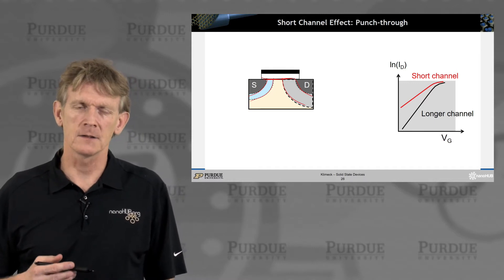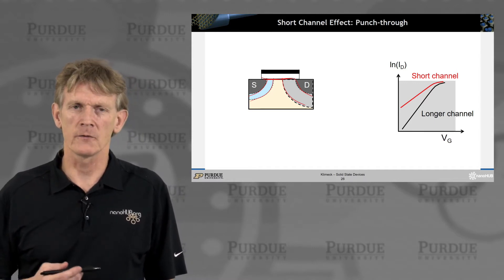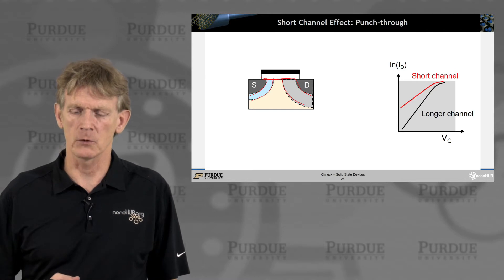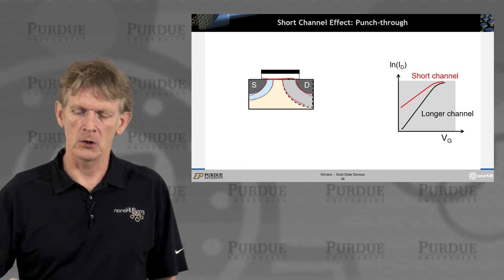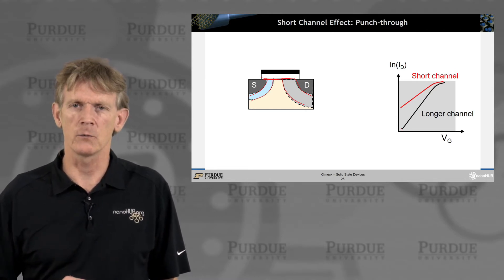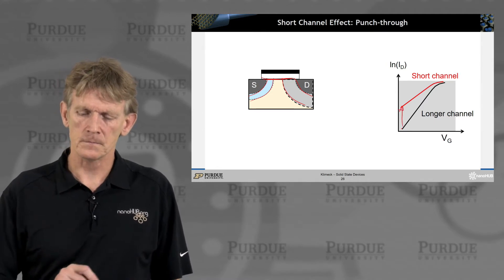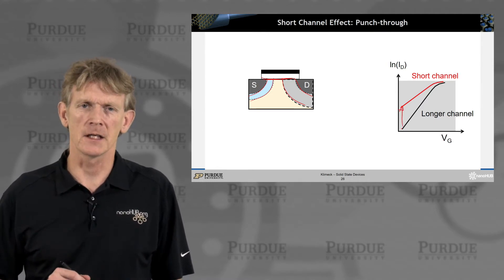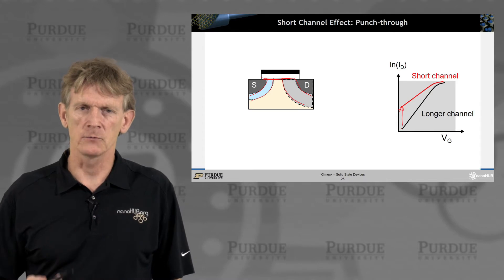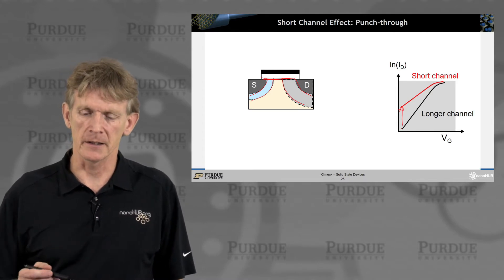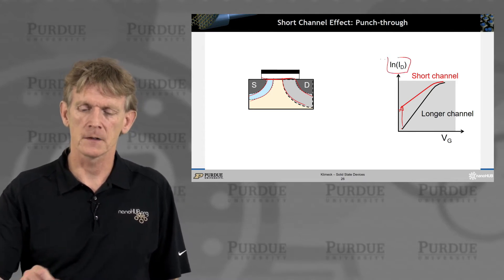What that does, and I'll depict some of the reasons in the next few slides, is if you have a long channel that seems to perform very well, what happens is that your off-current is getting worse and worse, and it rises exponentially. This is on a log scale.